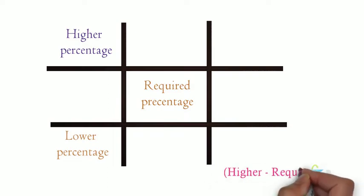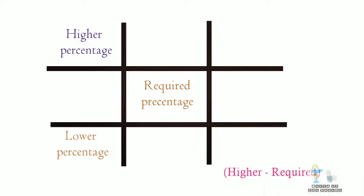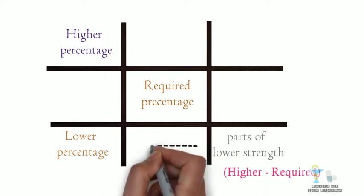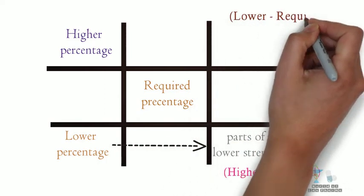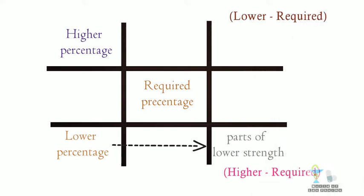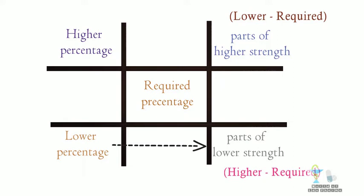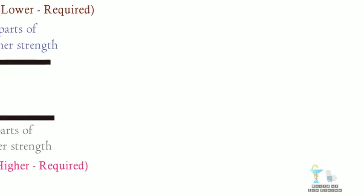4. Higher percentage minus desired percentage would give the parts of lower strength required for preparation. 5. In top right corner the parts of higher strength is written by subtracting the desired strength from the lower strength. 6. Most importantly negative values are not considered in this case. 7. Now we will get the required parts of stronger and weaker percentage to prepare the product.